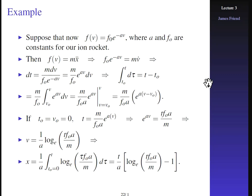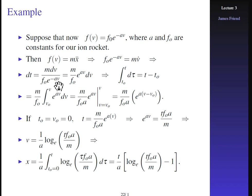Suppose that F(v) = F₀·e^(−Av), where A and F₀ are constants for this ion rocket — so the mass is constant. Then F₀·e^(−Av) = M·v-dot, and rearranging, dT = M·dV divided by F₀·e^(−Av), which gives M over F₀ times e^(Av) dV on the right-hand side.